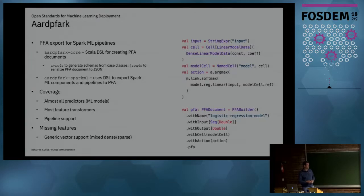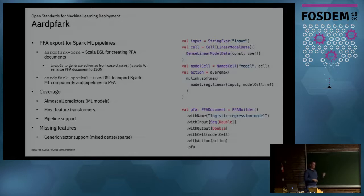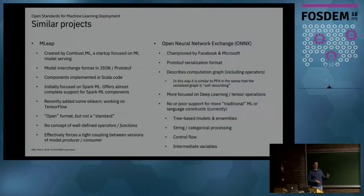In terms of coverage, we have full pipeline support, most feature transformers, and almost all the machine learning models in Spark. There are some major missing features — for example, there's no generic vector in PFA, so you either have to have a dense vector or a sparse vector. Really you want a generic one that can mix or match, because it gets very cumbersome to deal with both.